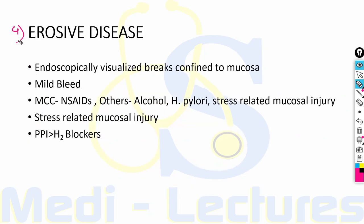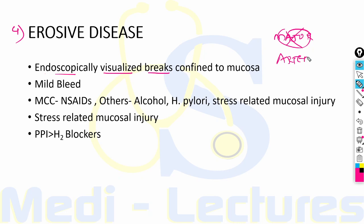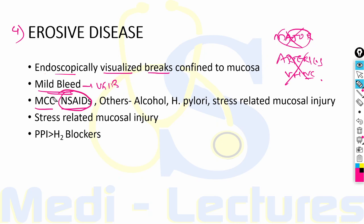The next cause of upper GI bleed is erosive disease. Erosions are endoscopically visualized breaks confined to the mucosa. They do not cause major bleeding because of the absence of arteries and veins in the mucosa. Erosions in the esophagus, stomach, or duodenum cause only mild upper GI bleed. The most common cause of these erosions is NSAID use; other causes include alcohol intake, H. pylori, or stress-related mucosal injury.